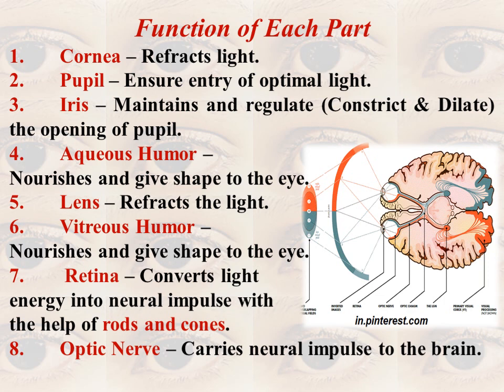The aqueous humor nourishes the eye and gives it shape. The lens, similar to the cornea, refracts the light. The vitreous humor also nourishes the eye and gives it shape. The retina converts light energy into neural impulses with the help of specialized photoreceptors — rods and cones. And the optic nerve has only one function: it carries neural impulses to the specialized areas of the brain.